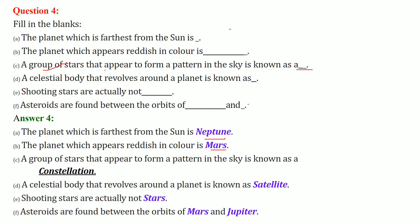A celestial body that revolves around a planet is known as a satellite. Shooting stars are actually not stars. Asteroids are found between the orbits of Mars and Jupiter.